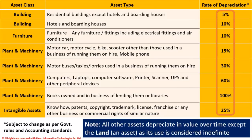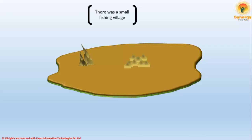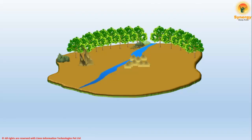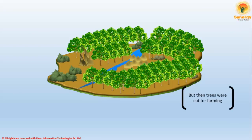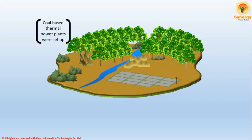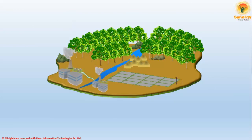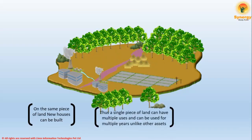To understand this, imagine there is a piece of land with a small fishing village on it, surrounded by green trees. Over time, these trees were cut for farming. Later, due to the need for electricity, coal-based thermal power plants were set up on the same piece of land. New houses can again be built on it. Thus, a single piece of land can have multiple uses over multiple years, unlike other assets. It can be concluded that although other assets depreciate in value over time, land as an asset has indefinite use.